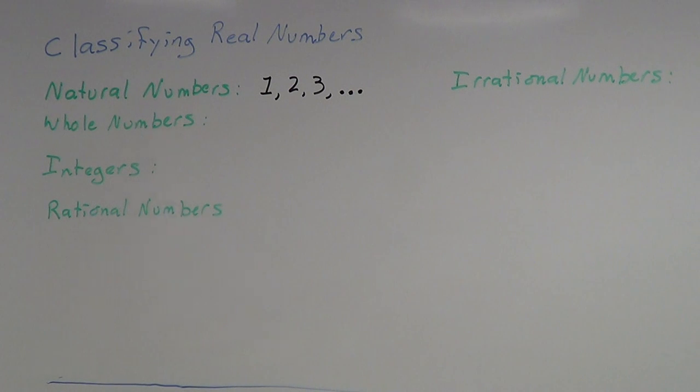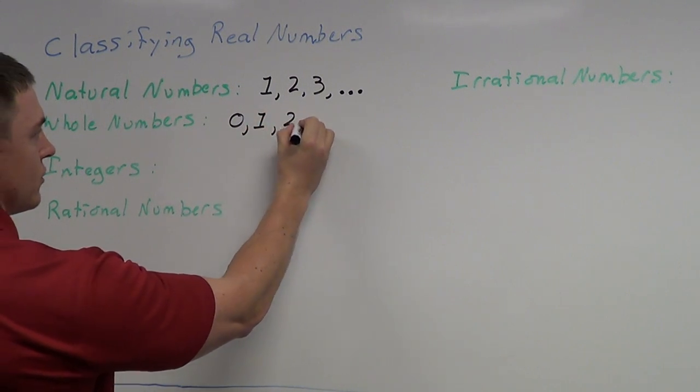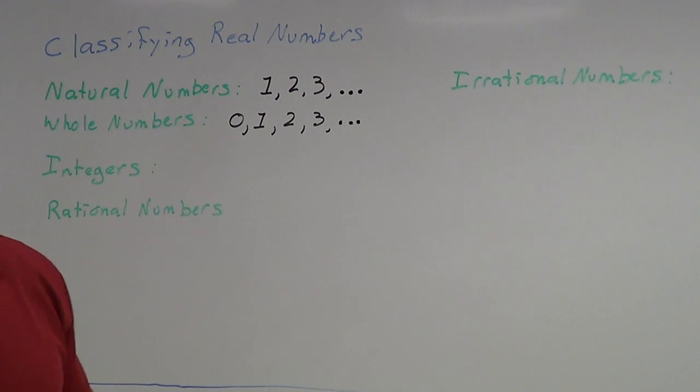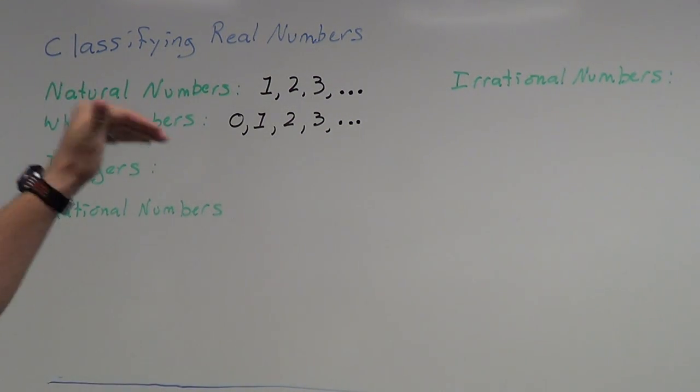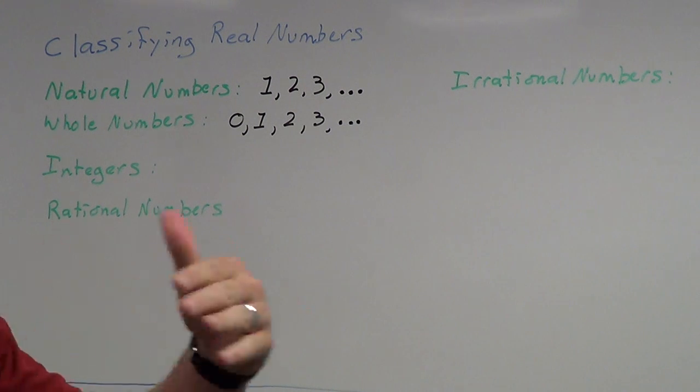Next classification we have is the whole numbers. Whole numbers are very similar to the natural numbers. It actually just includes one other number. That number would be zero. Zero, one, two, three, so on and so forth. The only difference between natural numbers and whole numbers is that whole numbers has one extra number, simply just zero.